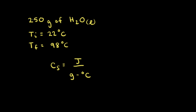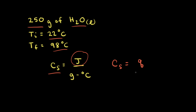Let's calculate how much heat is necessary to warm 250 grams of water from an initial temperature of 22 degrees Celsius to a final temperature of 98 degrees Celsius. Using the units for specific heat — joules per gram degree Celsius — we can rearrange: joules is the heat Q, grams is the mass M, and degrees Celsius is the change in temperature ΔT. Multiplying both sides by M and ΔT gives us Q = MCΔt.